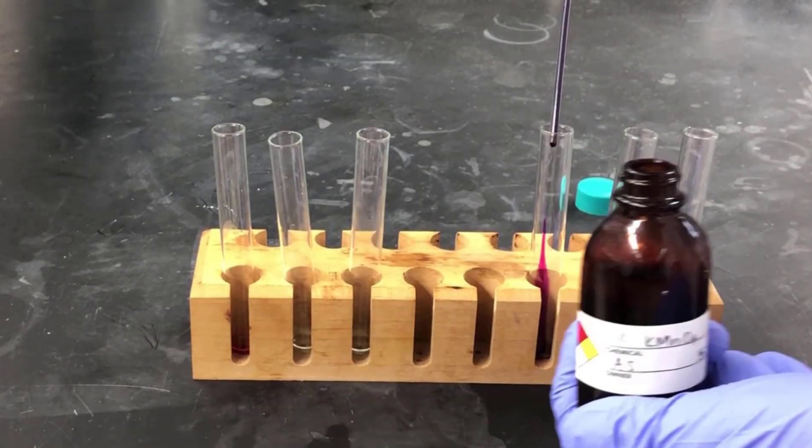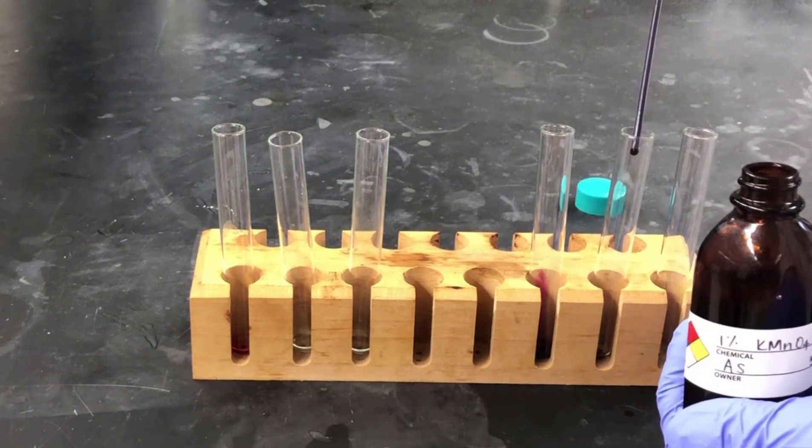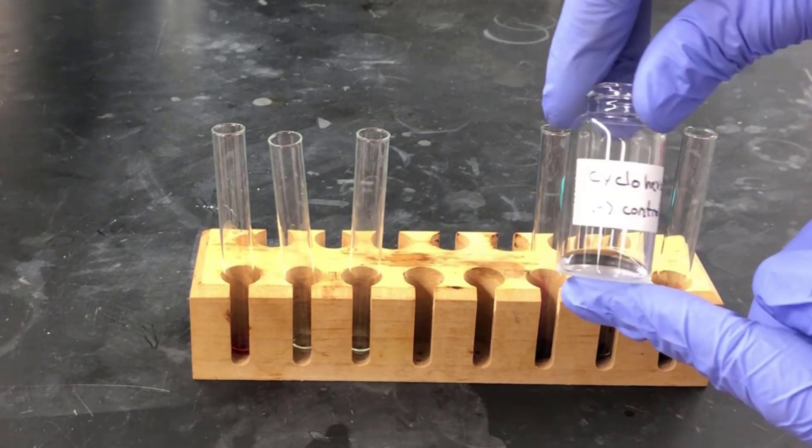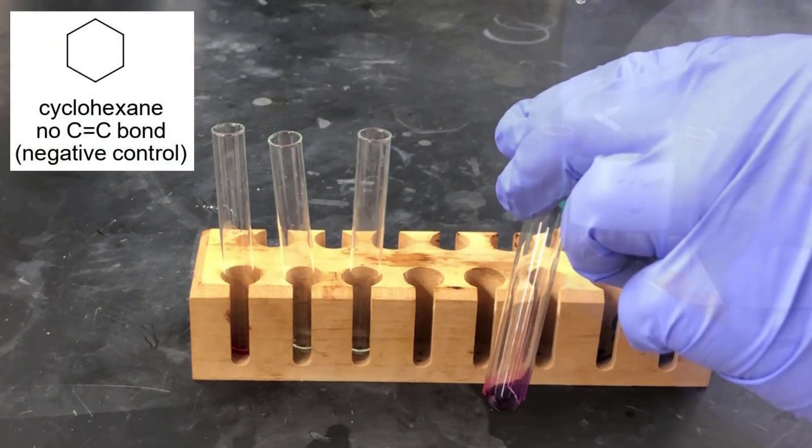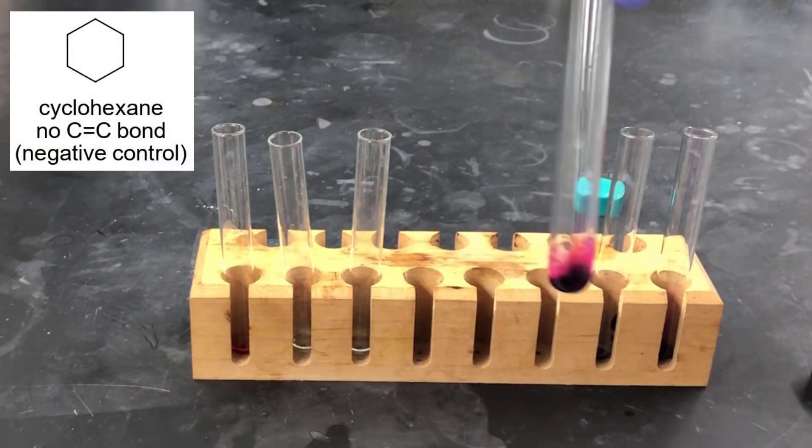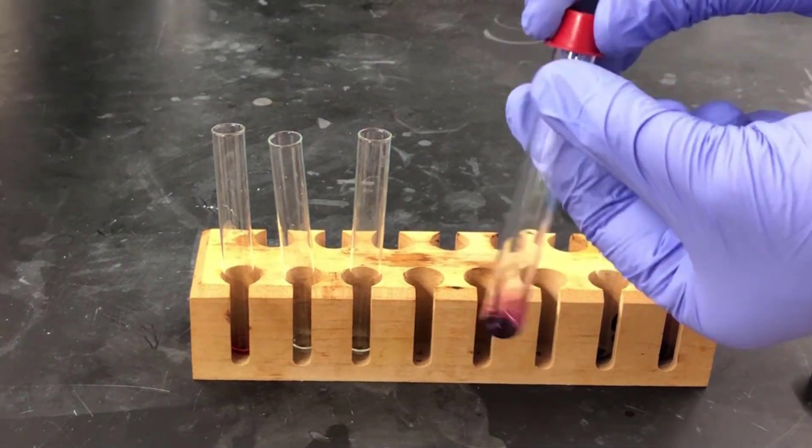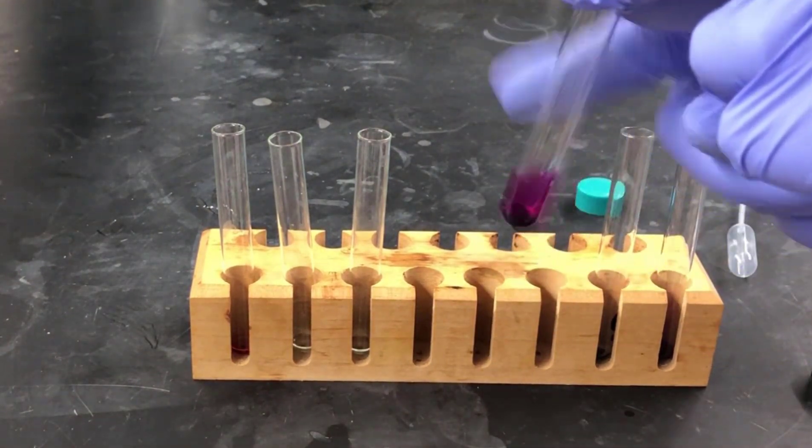As before, we're going to do three experiments, so we're going to prepare three small test tubes with some potassium permanganate in each. First, we'll do the negative control experiment with cyclohexane. We'll add a few drops of cyclohexane, agitate the tube a bit, give it a good chance to react, and observe the result.